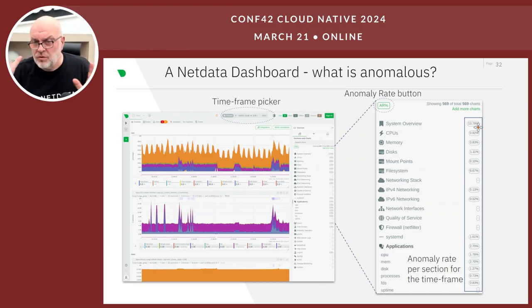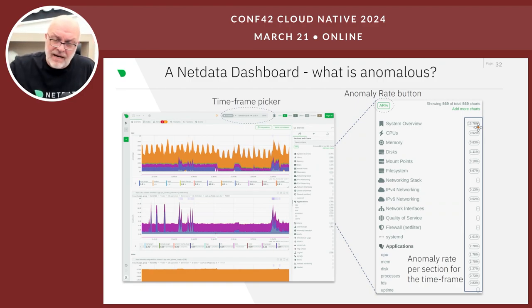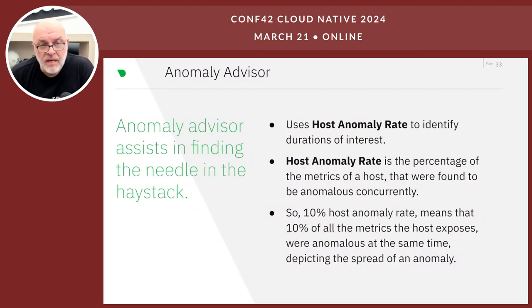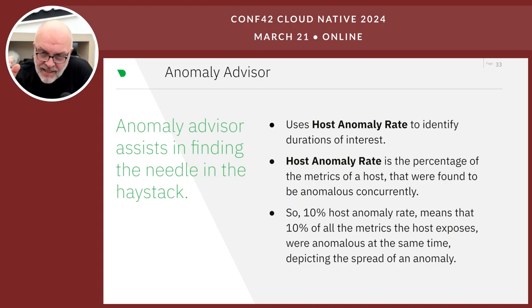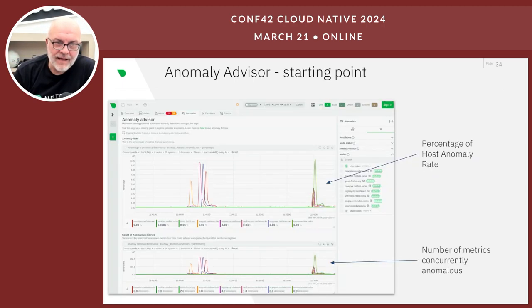If you have a problem, just go to the NetData dashboard reflecting the last 5 or 15 minutes, press that button, and you'll immediately see which metrics across the entire dashboard are anomalous so you can check what's happening. For the host anomaly rate, we calculate the percentage of metrics on a server that are anomalous concurrently. What we realize is that anomalies happen in clusters.